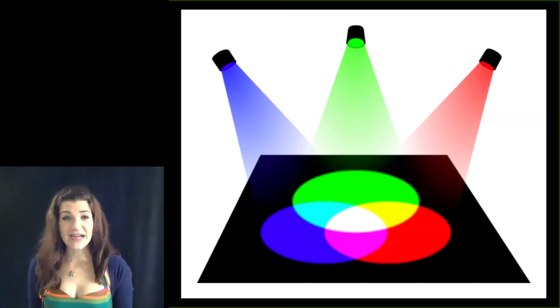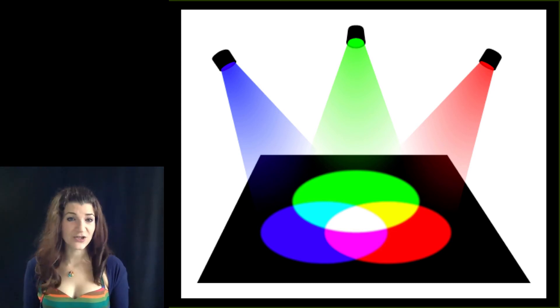Now, despite the fact that the visible spectrum contains almost an infinite number of gradations of color, it's possible to represent every point on the visible spectrum using only three colors, the three primaries of light, blue, green, and red.